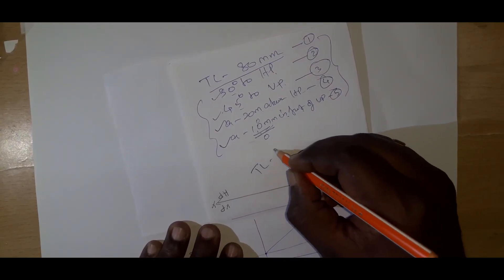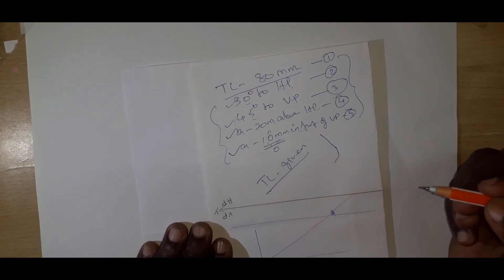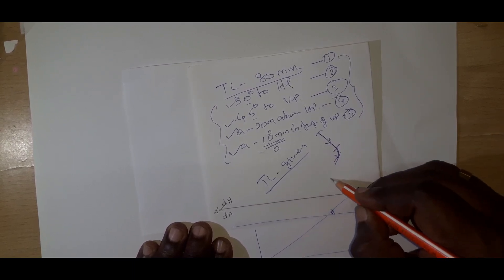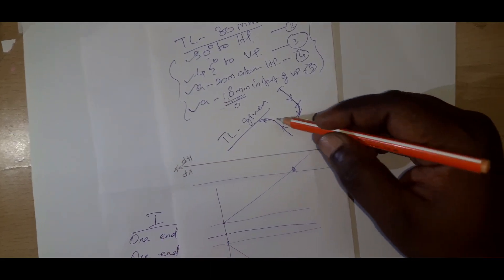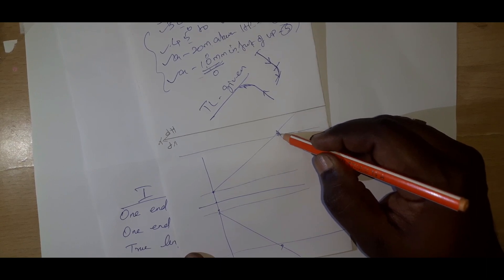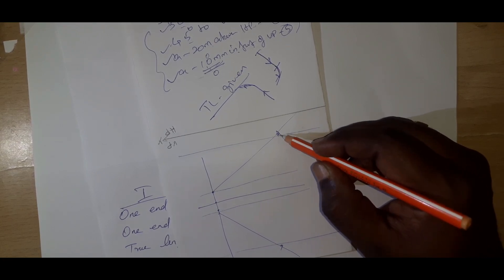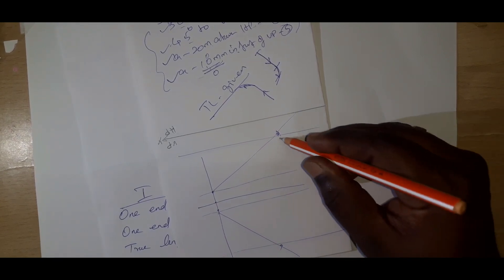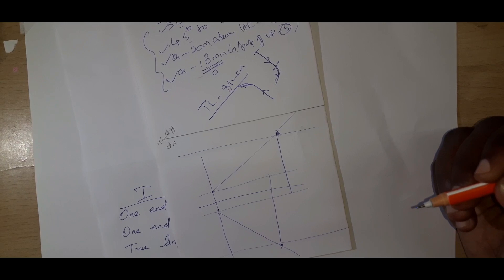Whenever the true length is given, we need to start with a straight line and then an arc. We need to start with a straight line first, then an arc. From the free end of the true length line, I draw a straight line up to the starting point locus of the next view. This applies to both the front view and top view.